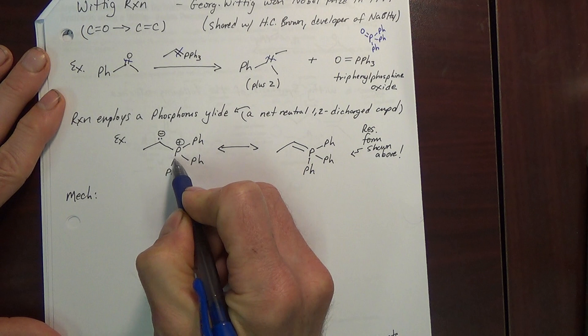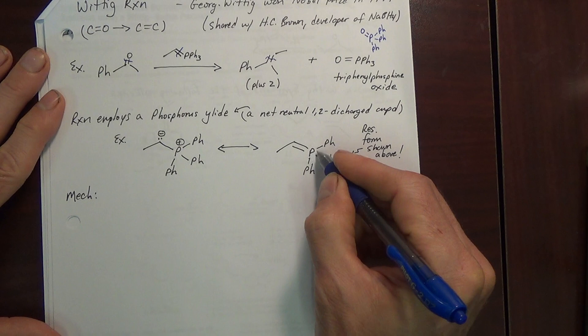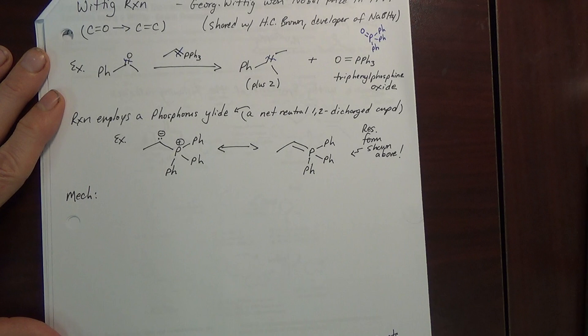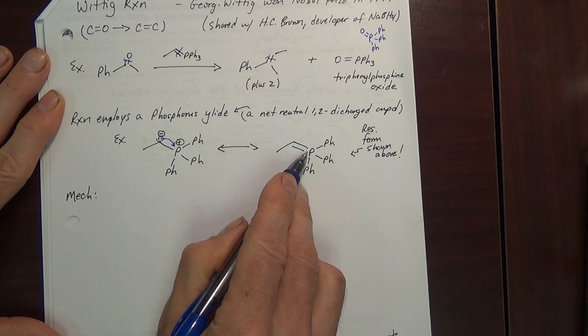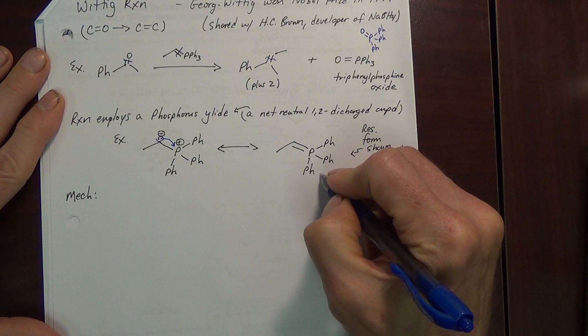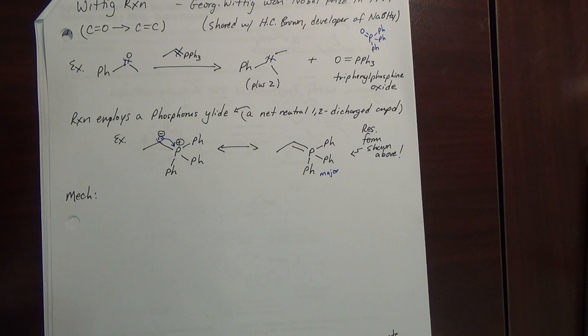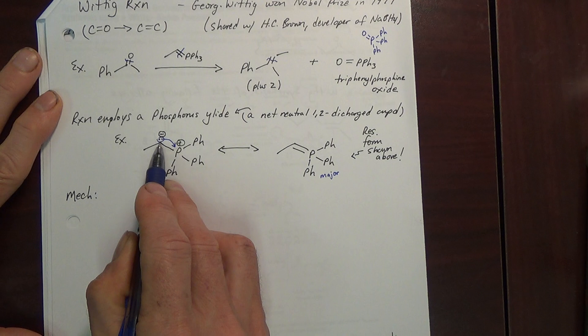So if you don't like to expand octets, you would prefer the charged resonance structure. We can take those electrons and move them in to stabilize the positive — that would give the double-bonded form. We can do that again because phosphorus can make five bonds. This double-bonded form is the major resonance structure because there are more bonds, but the charged structure does contribute, and we see that the carbon has some carbanion character — thus, it has some nucleophilic character.